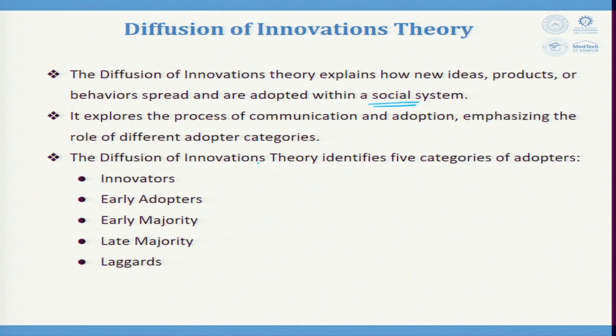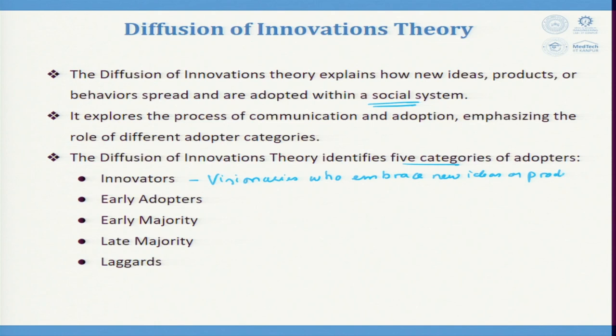The Diffusion of Innovation Theory identifies five categories of adopters. The first is the innovator — a visionary who embraces new ideas, products, or processes.